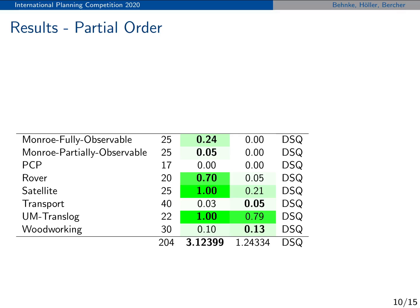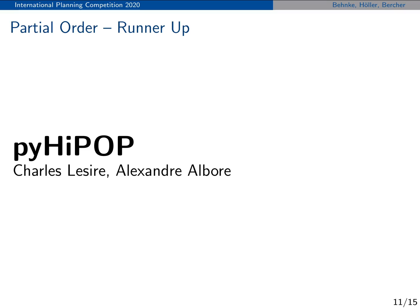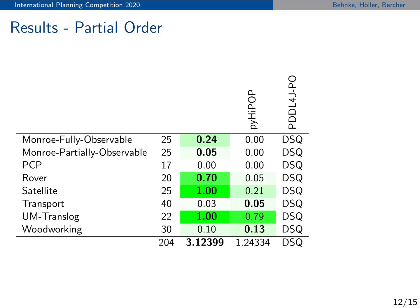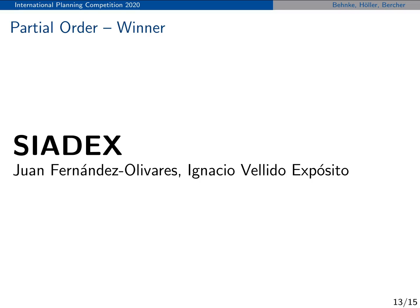For the partial order track, we only had three of the six planners participating because some of them can't support partial order in the domains, and one participant was sadly disqualified. Second place and runner-up goes to PI HIPOP, developed by Charlesier and Alexandre Albor — congrats. And the winner of the partial order track is Ciadex, developed by Juan Fernandez-Olivares and Ignacio Villiruo-Exposito. Congratulations.